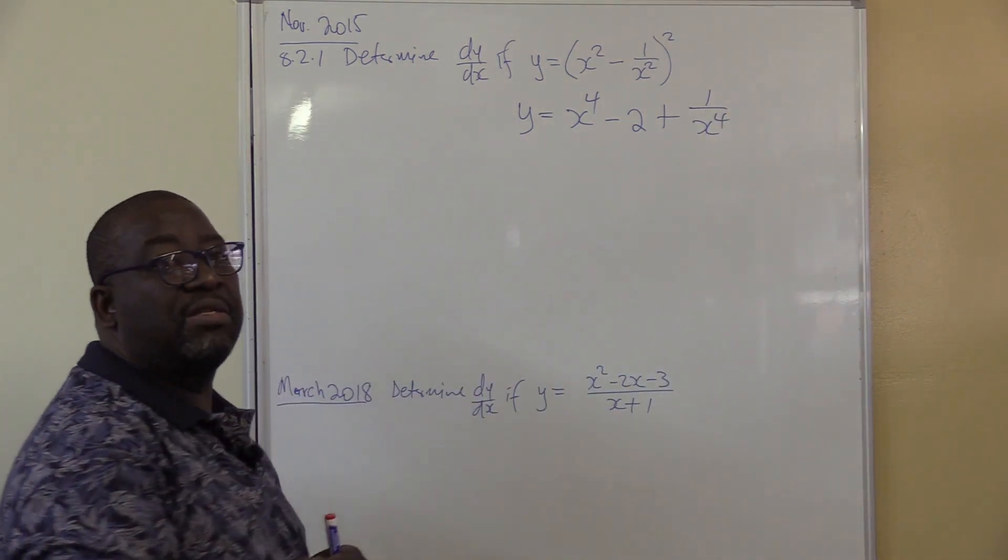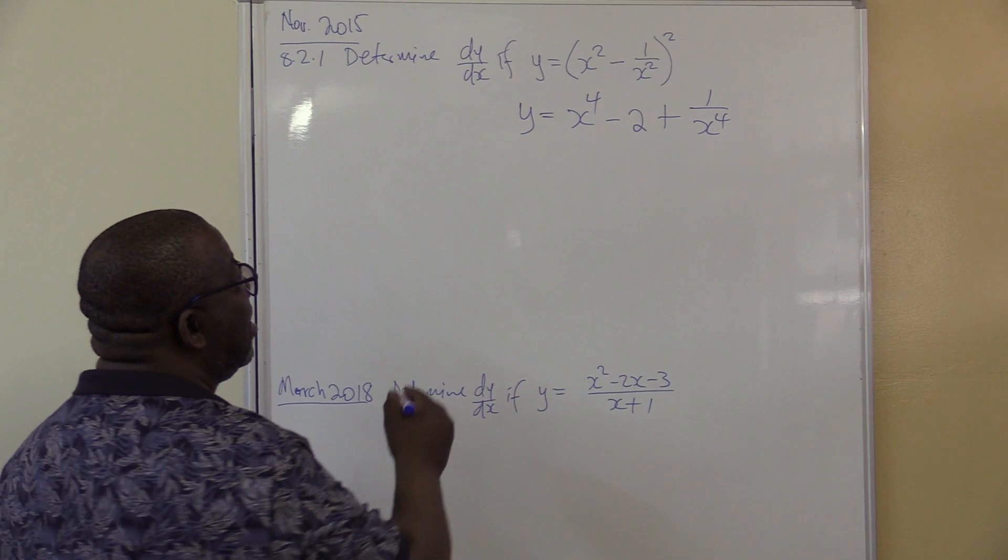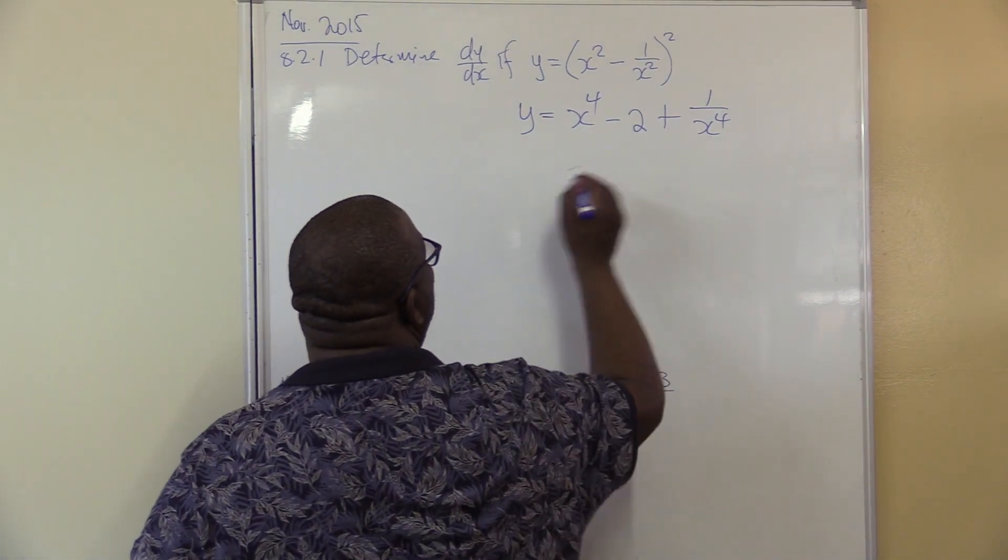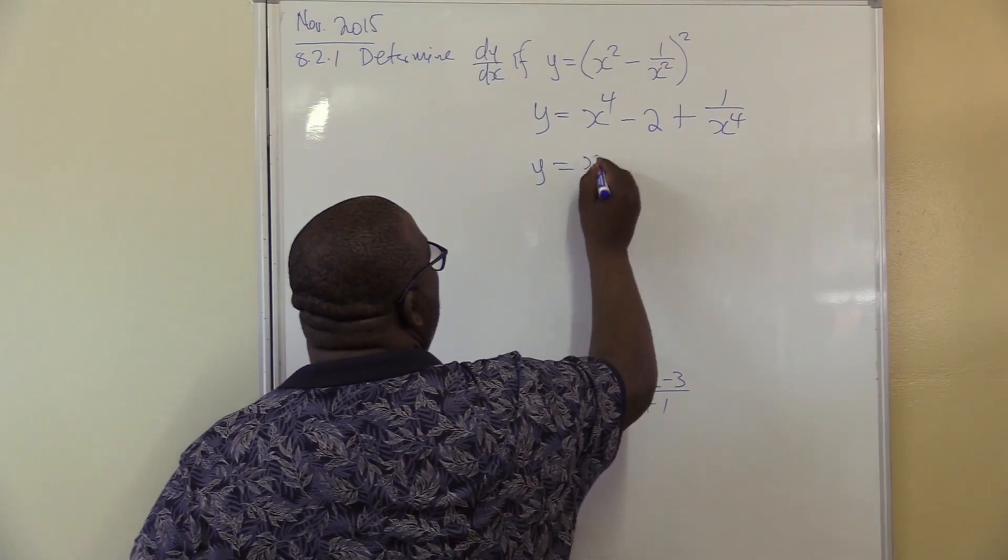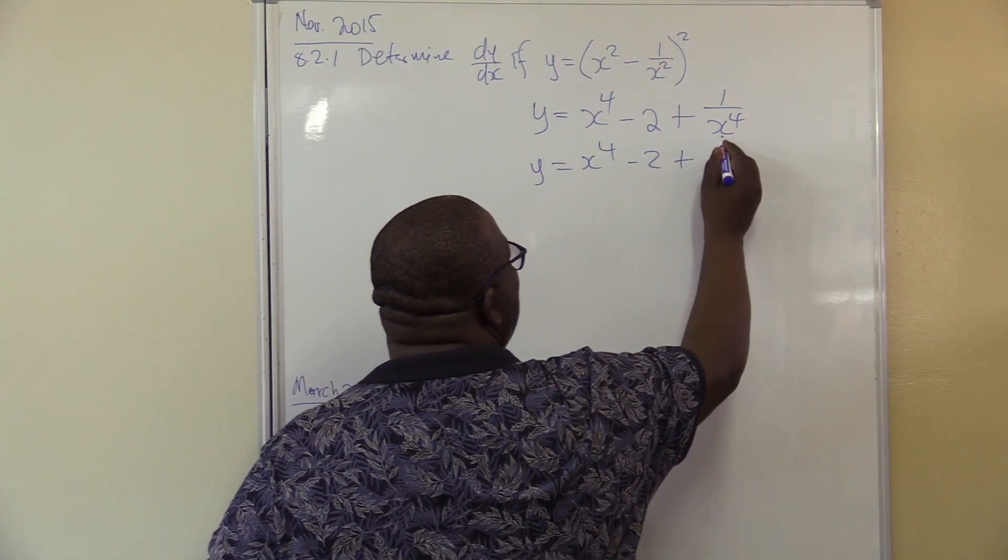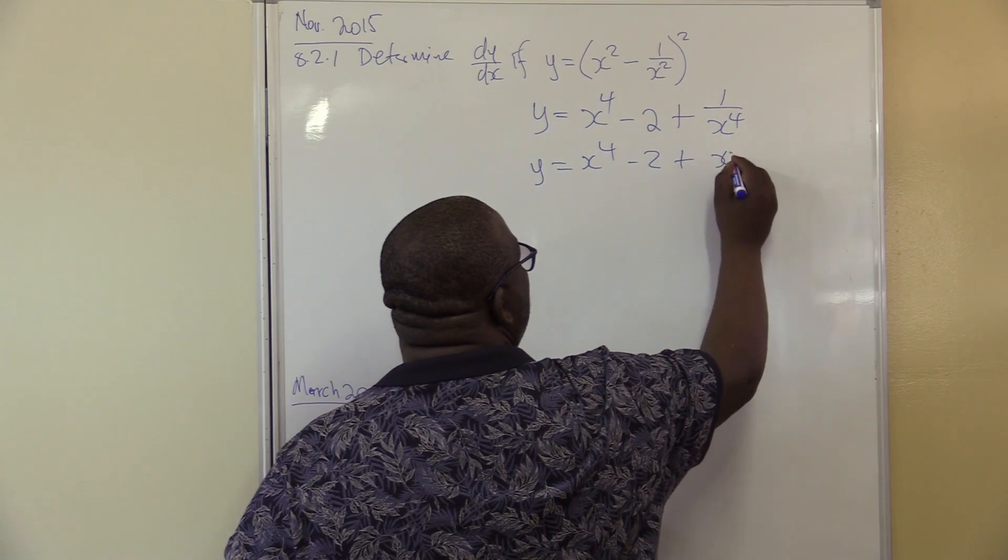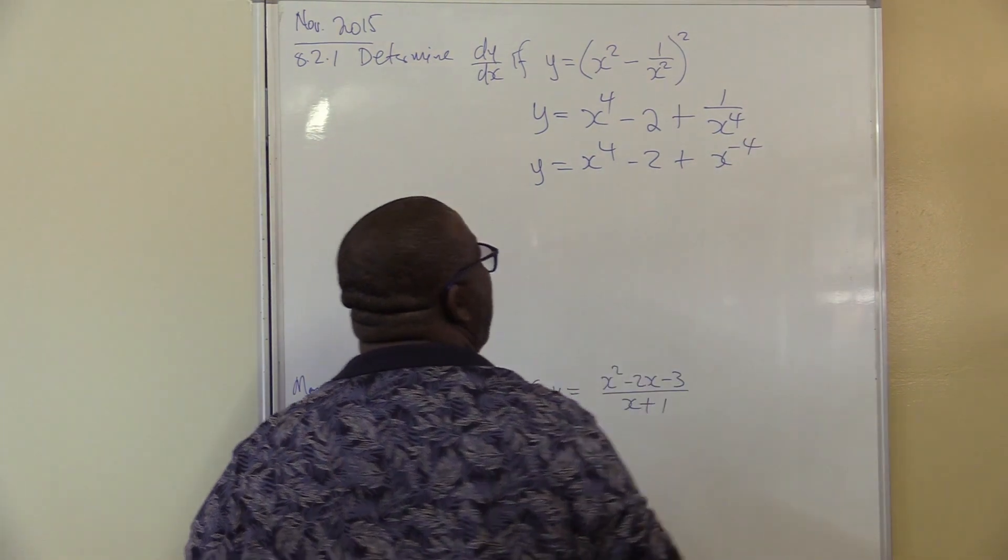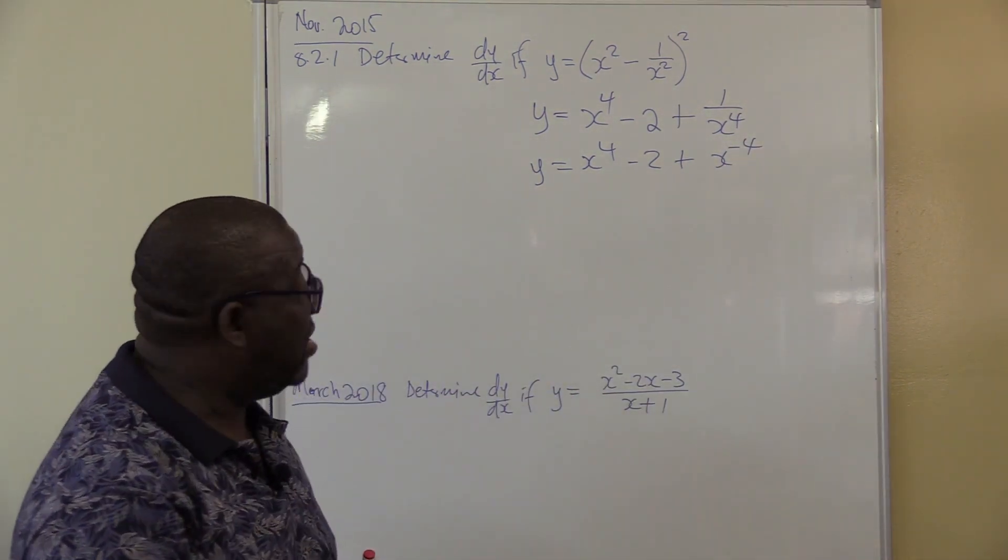Now it is clean. Now we can find our dy/dx. Before that, let me just clean this one. This is y equals x to the power 4 minus 2 plus, take this one on top, it will be x to the power minus 4. Now we just clean. I can find my derivative.